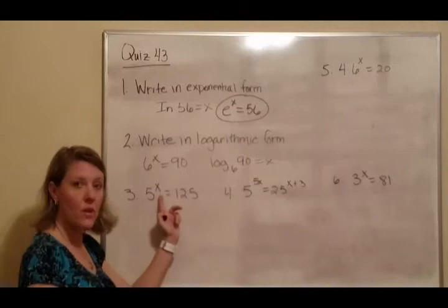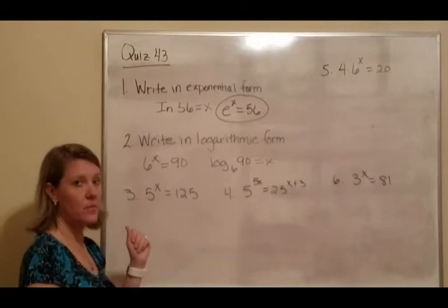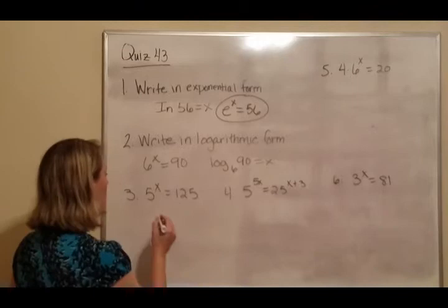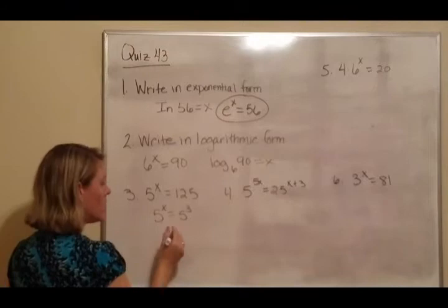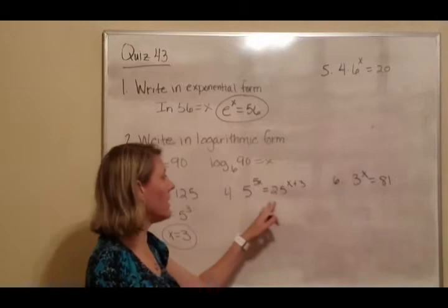And then they're going to have equations like this in which they want you to solve for x. Well, if we get these both to have the same base, then we can put the exponents together. Well, this is 5 to the third cubed, in other words. So since the bases are the same, x equals 3.